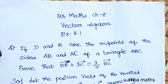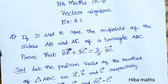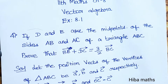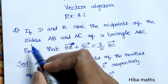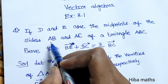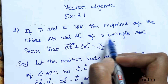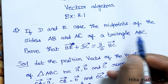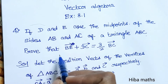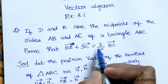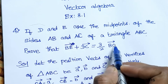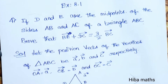Hello students, welcome to Hibamax 11th Standard Max Chapter 8 Vector Algebra, exercise 8.1, 4th question. If D and E are the midpoints of the sides AB and AC of a triangle ABC, prove that BE vector plus DC vector is equal to 3 by 2 BC vector.